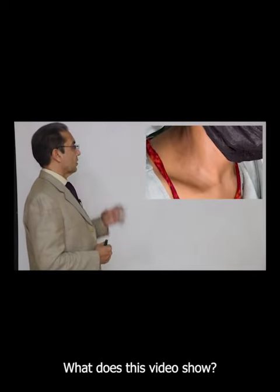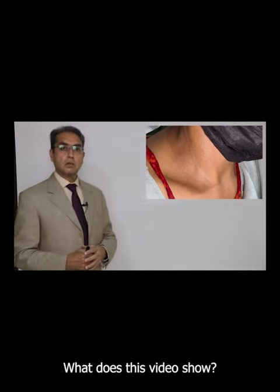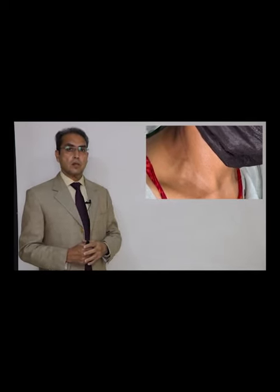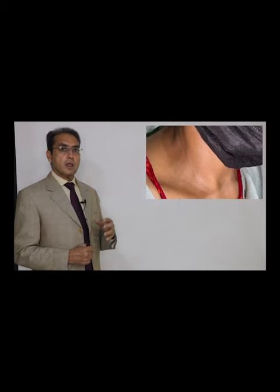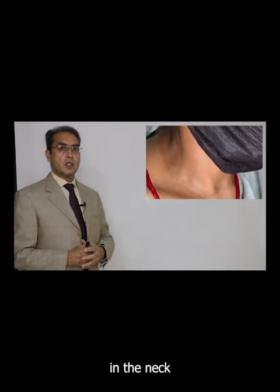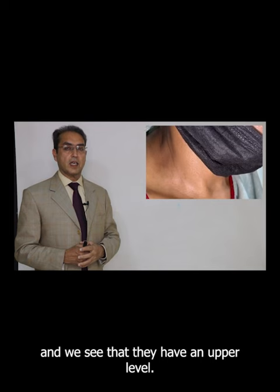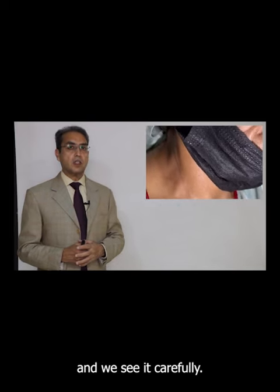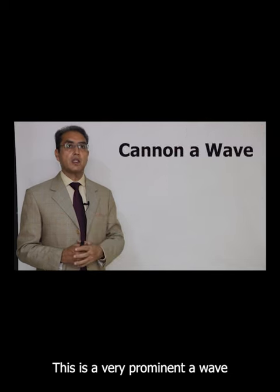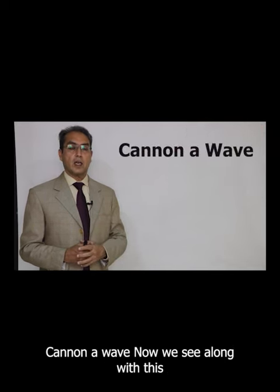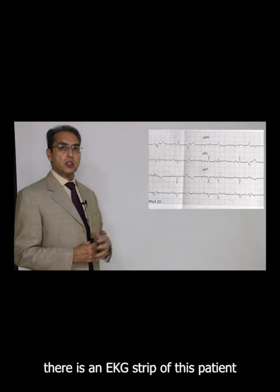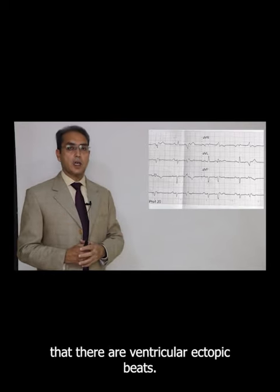Let us see this video. What does this video show? These are pulsations in the neck and we see that they have an upper level. This is an arterial pulse and we see it carefully. This is a very prominent A wave, so this is called Canon A wave. Now we see along with this there is an ECG strip of this patient showing that there are ventricular ectopic beats.